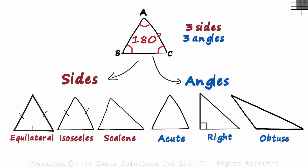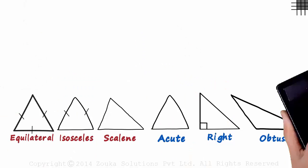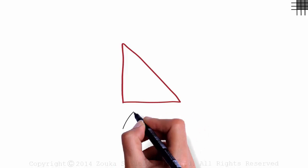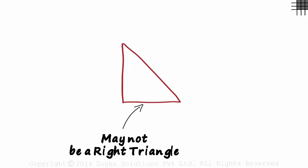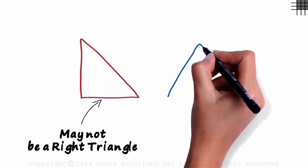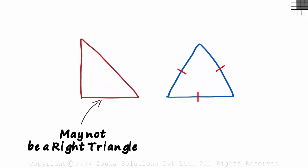But sometimes it gets tricky and we need to make sure we avoid assumptions. We may be given a triangle like this. Though it very much looks like one, it may not be a right triangle. Or this triangle which seems to have all its sides equal to each other may not be equilateral.